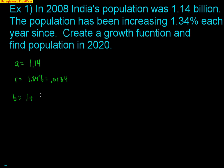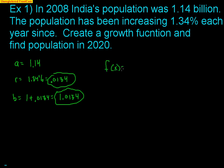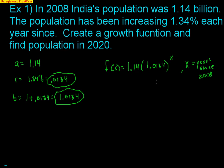That means B, the growth factor, is 1 plus 0.0134, which is 1.0134. So my function is F(x) = 1.14 times 1.0134 raised to X, where X is years since 2008. If I plug in 0, I get 1.14 billion — the 2008 value. To find the population in 2020, X equals 12, because 2020 is 12 years after 2008. So I'll plug in 12 for X.